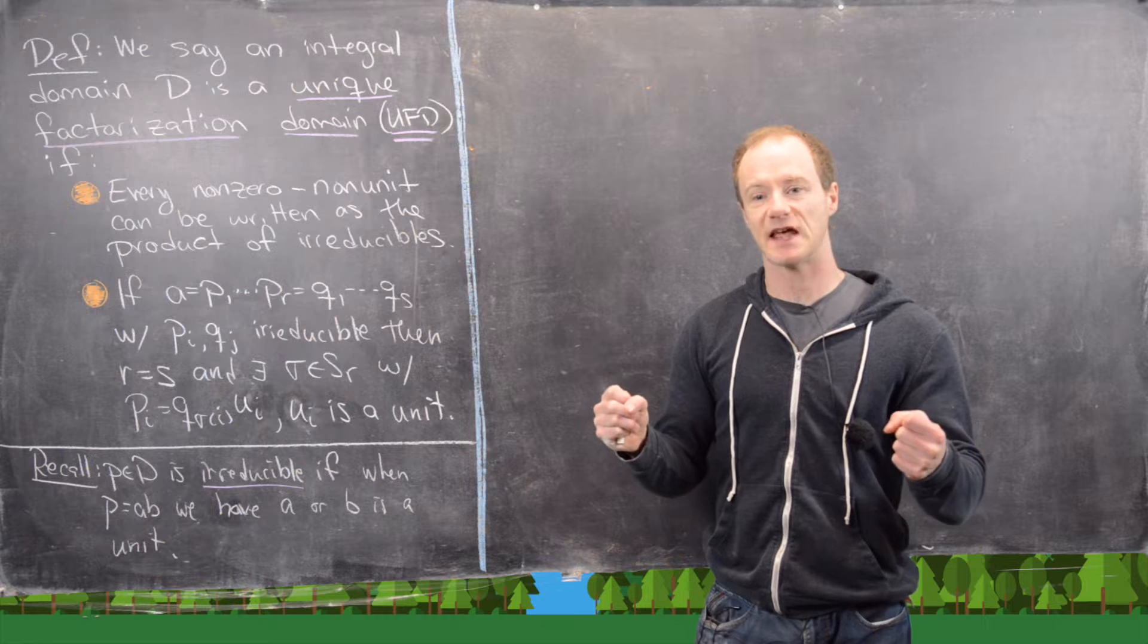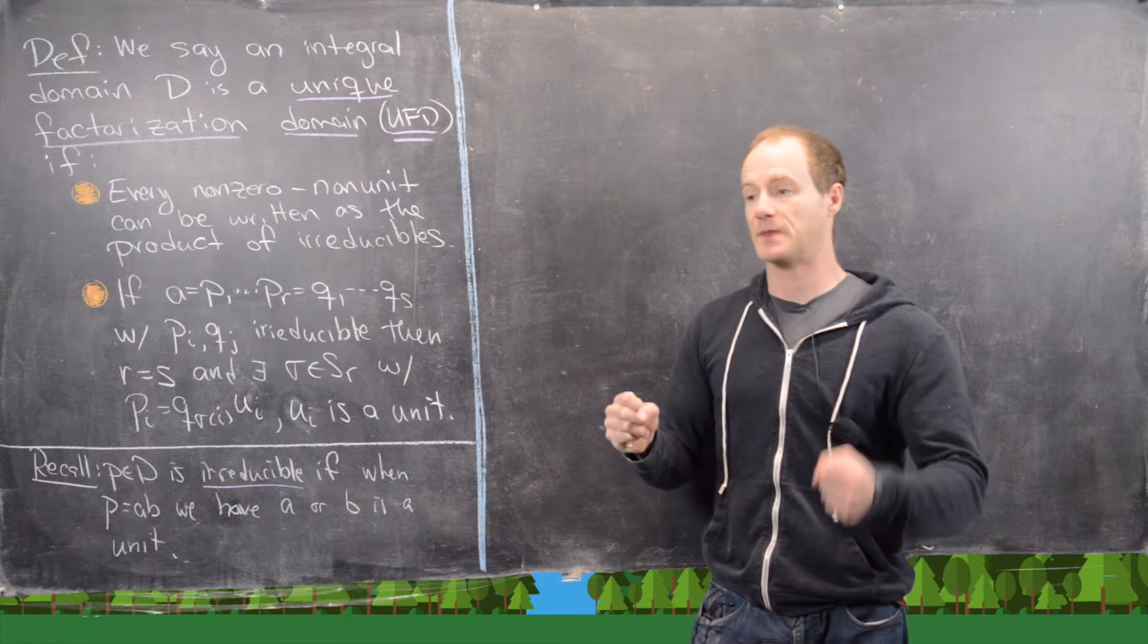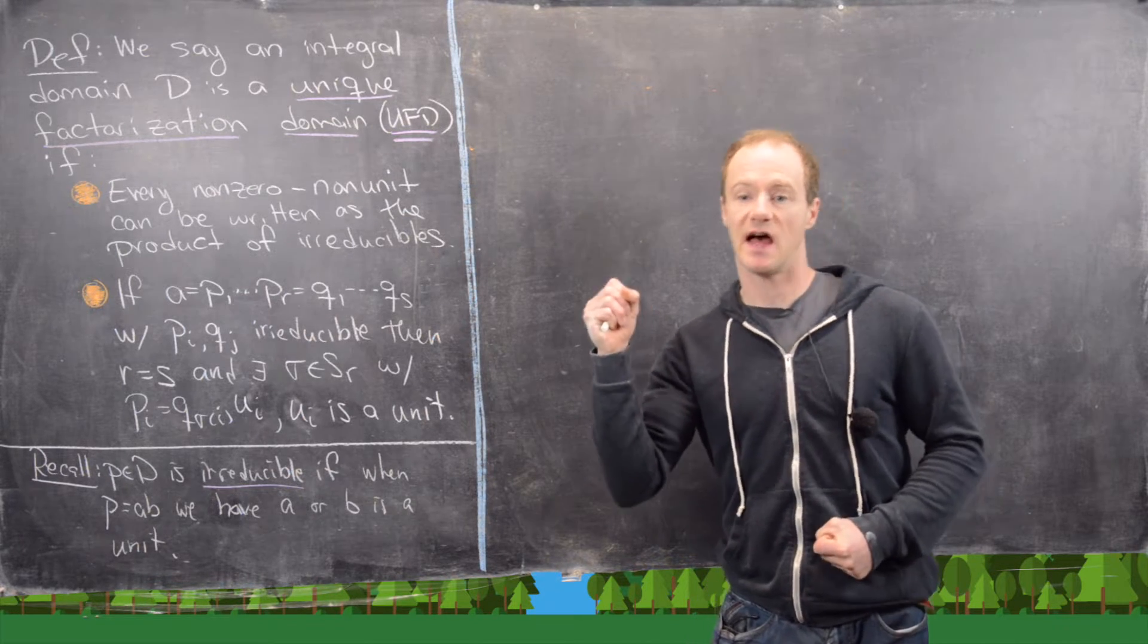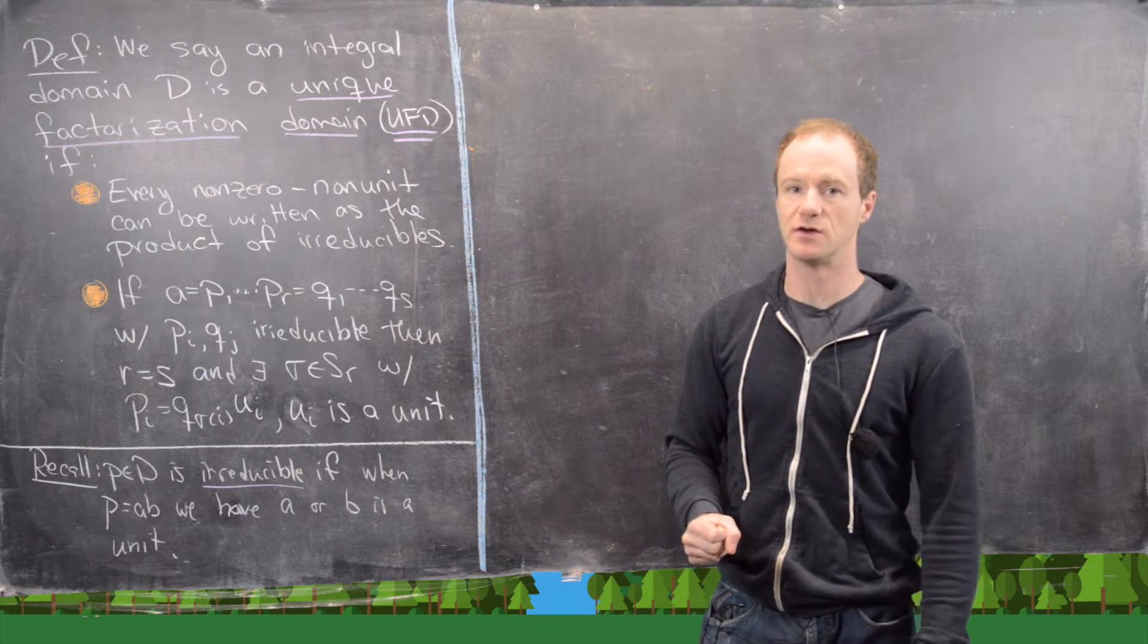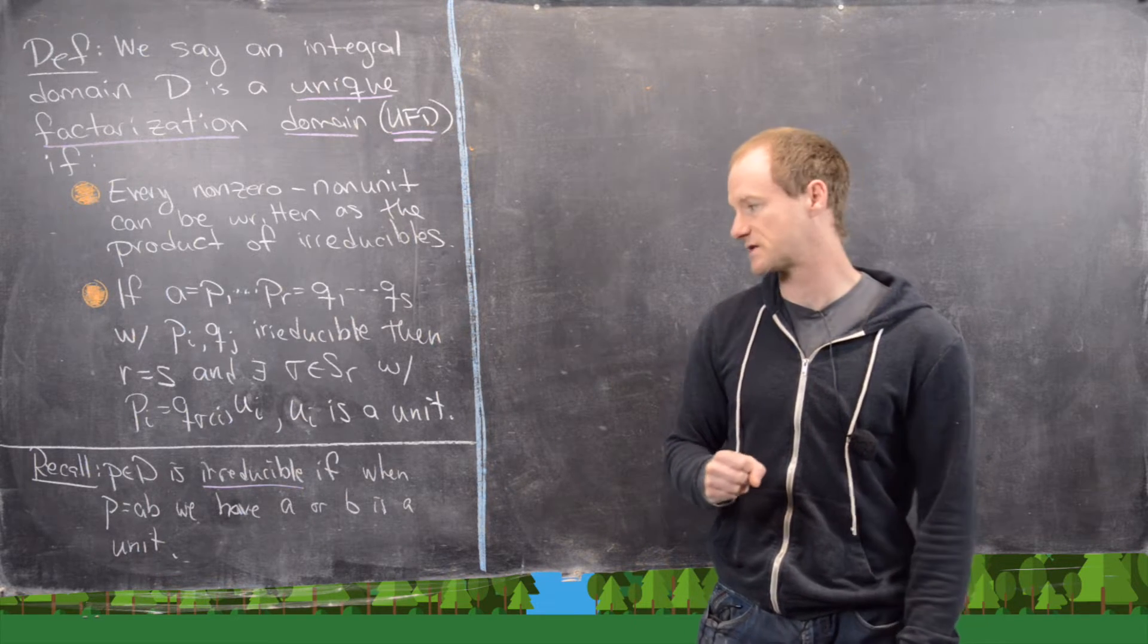They may not be the same list, but every element in the P list is an associate of an element in the Q list and vice versa, and there's a one-to-one correspondence there.